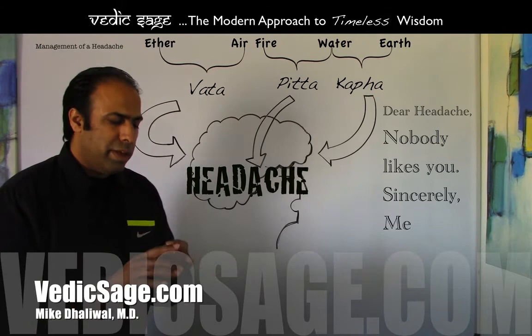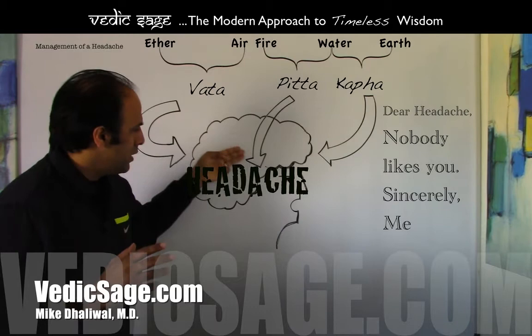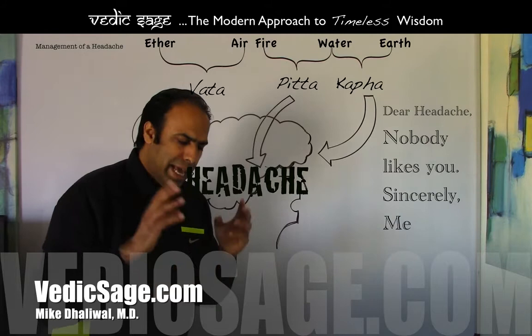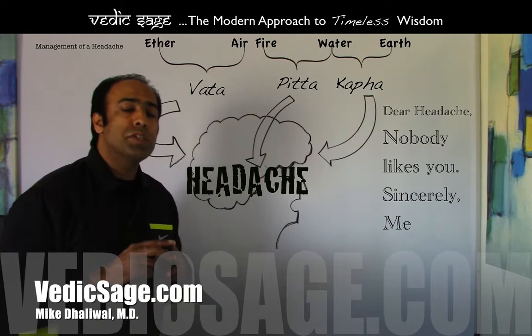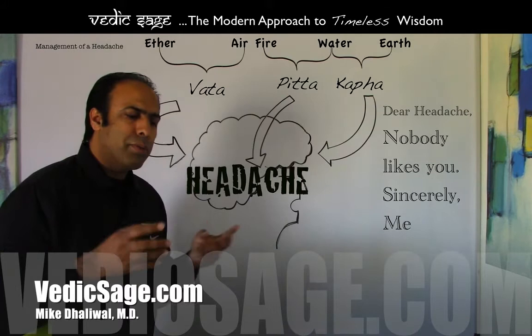Now we'll take a look at pitta dosha. Pitta is made up of fire and water with the qualities of heavy, sharp, light, liquid, mobile and oily. And if these qualities of pitta become aggravated, they can lead to a pitta type headache that's characterized as intense, sharp, and a penetrating type headache. This is thought to be due to the excessive fire element of pitta dosha, which can occur due to excessive exposure to direct hot sunlight or even hyperacidity and acid indigestion.